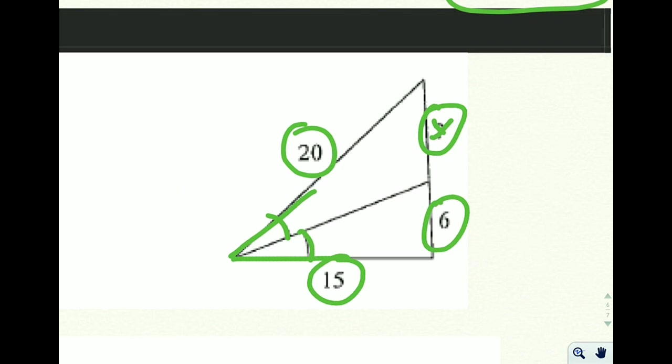Let's call this x instead of question mark, a little harder to work with question mark. 20 over x is equal to, so outside over the bottom is equal to 15 over 6.